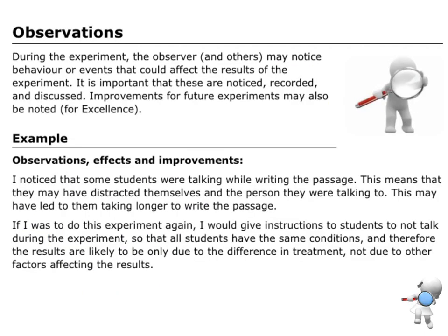The other thing we want to quickly remind you about is the observations. What things you're observing — what are some of the behaviors or events that might affect the results of that experiment. So if I'm getting people to write with their dominant hand, have I noticed other people talking? And if they're talking, maybe they're going to take longer to write the passage. Notice how I'm explicitly trying to connect my observation with the effect on that response variable.